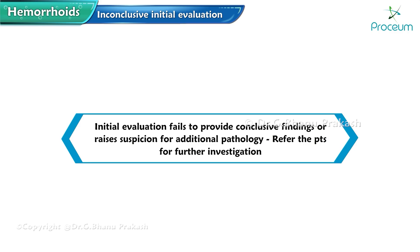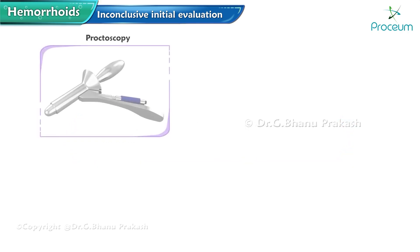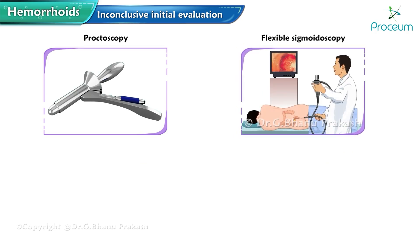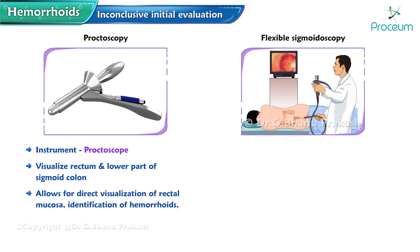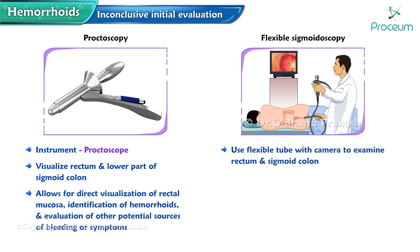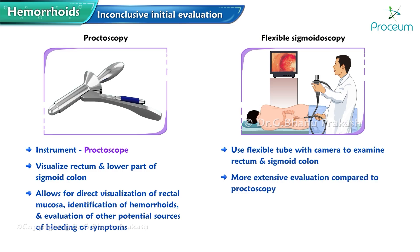In cases where the initial evaluation fails to provide conclusive findings or raises suspicion for additional pathology, a proctoscopy or flexible sigmoidoscopy is recommended. Proctoscopy uses a specialized instrument to visualize the rectum and lower sigmoid colon, allowing direct visualization of the rectal mucosa and identification of hemorrhoids. Flexible sigmoidoscopy uses a flexible tube with a camera to examine the rectum and sigmoid colon, providing a more extensive evaluation compared to proctoscopy.